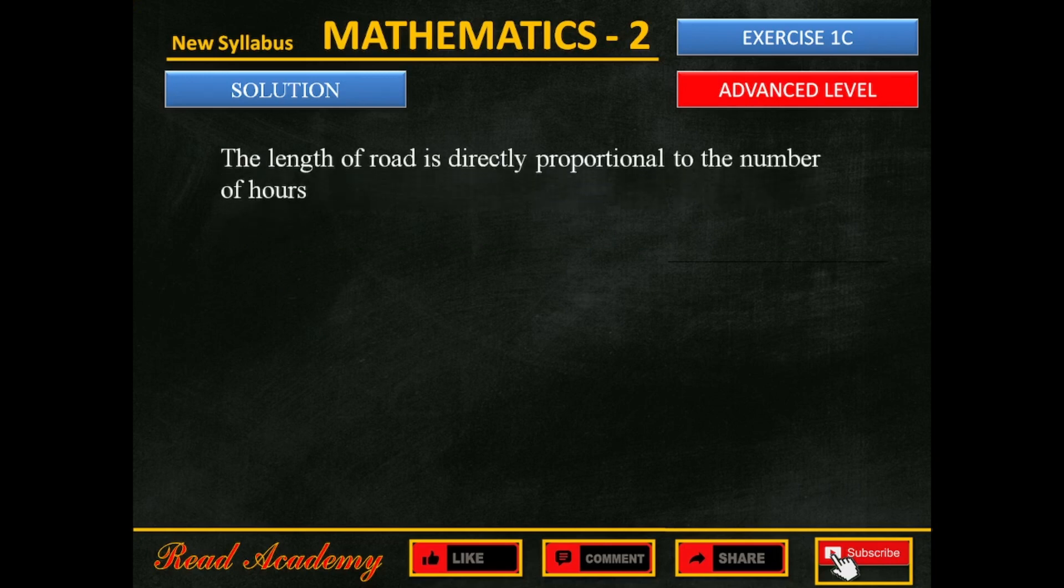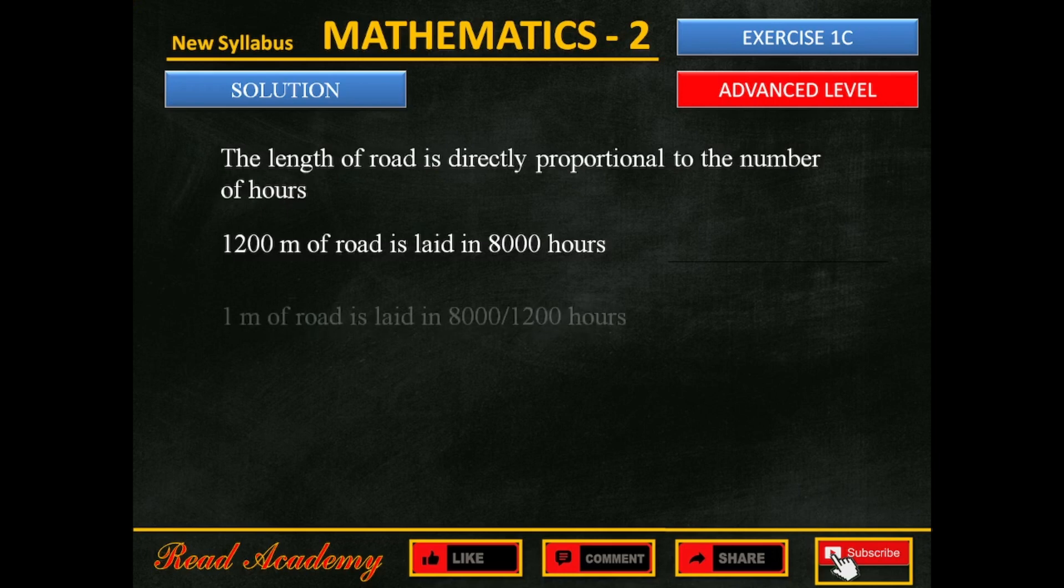The length of the road is directly proportional to the number of hours. Since 1,200 meters of road is laid in 8,000 hours, how long will it take to lay 1 meter of road? To find this, we are going to divide 8,000 by 1,200.